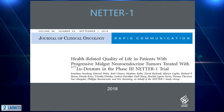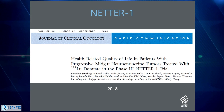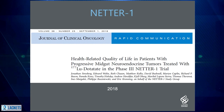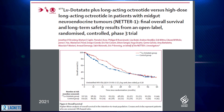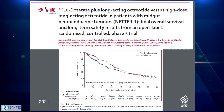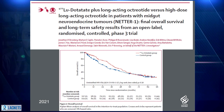Since that initial 2017 publication, there have been important additional publications related to the NETTER-1 study. In 2018 came the quality of life publication, which showed an improvement across various types of symptoms associated with this disease as a result of using PRRT. More recently, in 2021, was the publication of the final overall survival results. The curves are much closer together than the progression-free survival data, and while not statistically significant, patients receiving PRRT had an increase in overall survival of almost one year, which is considered relatively significant clinically.